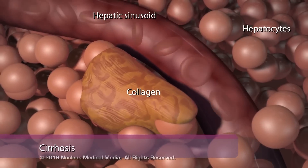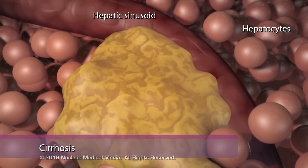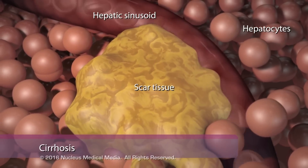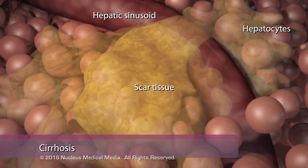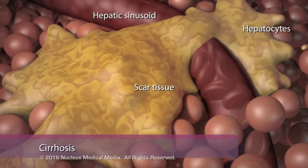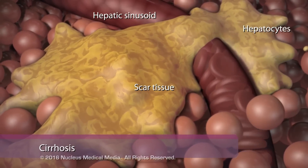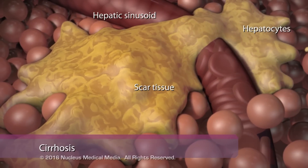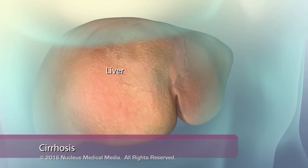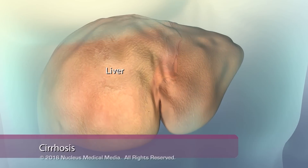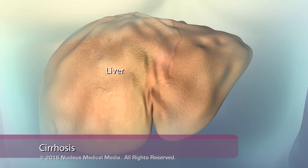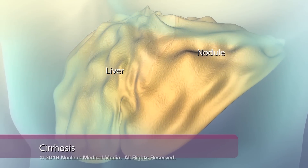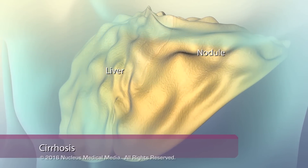As cells die over time, they are gradually replaced with scar tissue that forms nodules. The scar tissue blocks the flow of blood through the liver, slowing the metabolism of nutrients and filtration of toxins, gradually diminishing liver function.